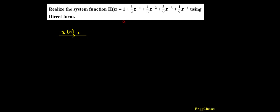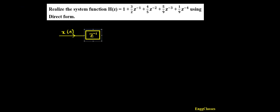After this I need 3/2 z to the power minus 1. How do I get z⁻¹? To get z⁻¹ I need to get a delay element. So I have got a delay element here, and after this I'm going to get x(n-1), or z⁻¹. That gets multiplied with 3/2.